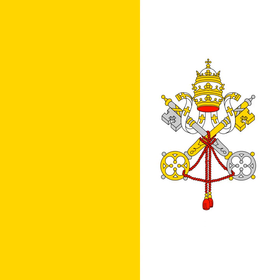The flag consists of two vertical bands, one of gold or yellow and one of white, with the crossed keys of St. Peter and the Papal Tiara centered in the white band. The crossed keys consist of a golden and a silver key, in which the silver key is placed in the dexter position. It is one of only two square sovereign state flags, the other being the flag of Switzerland.